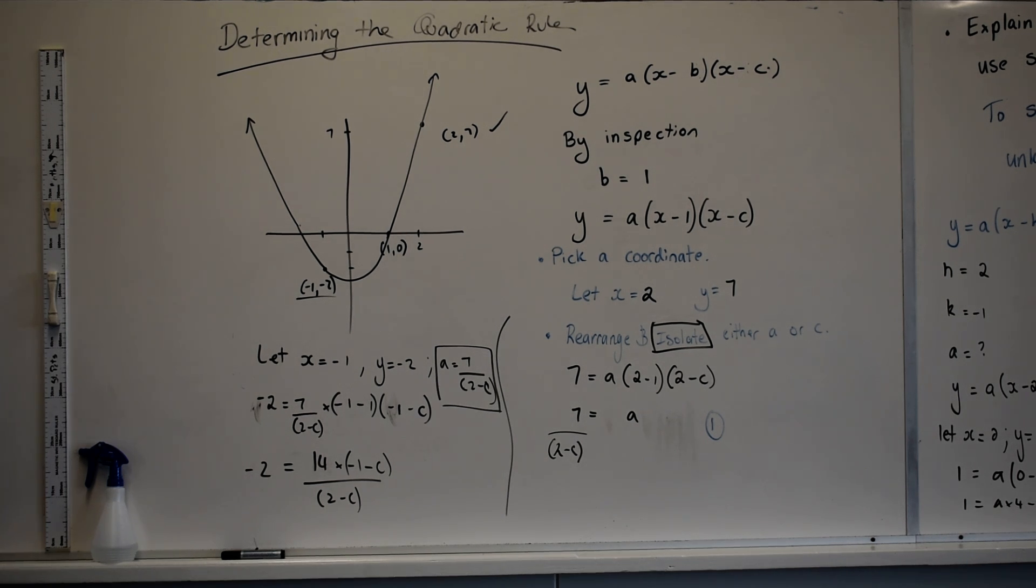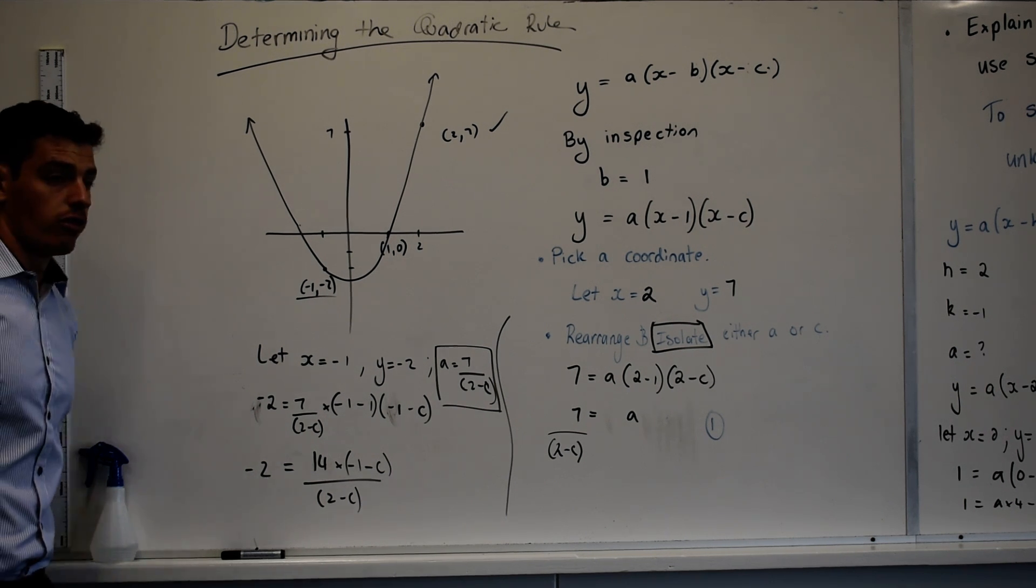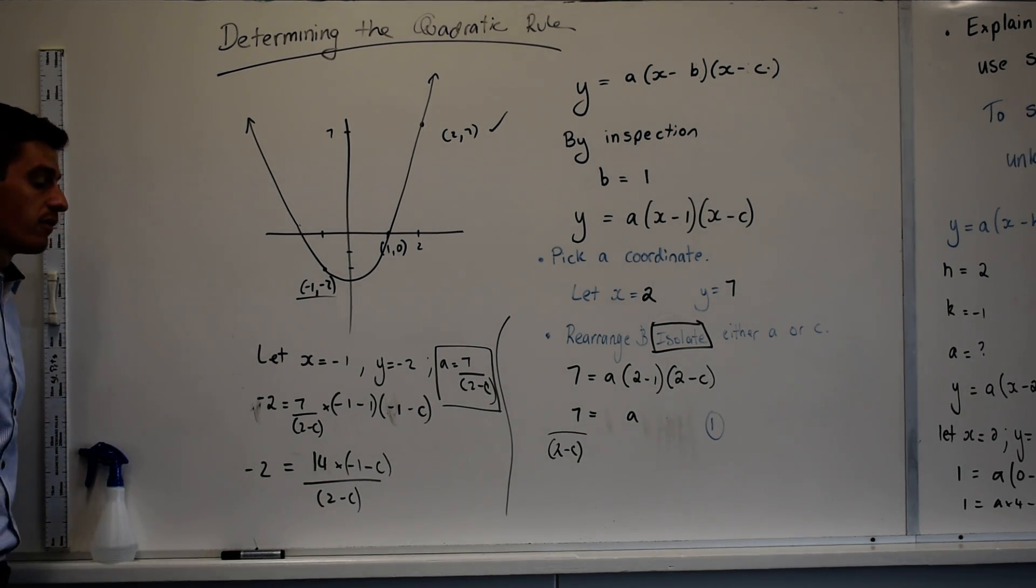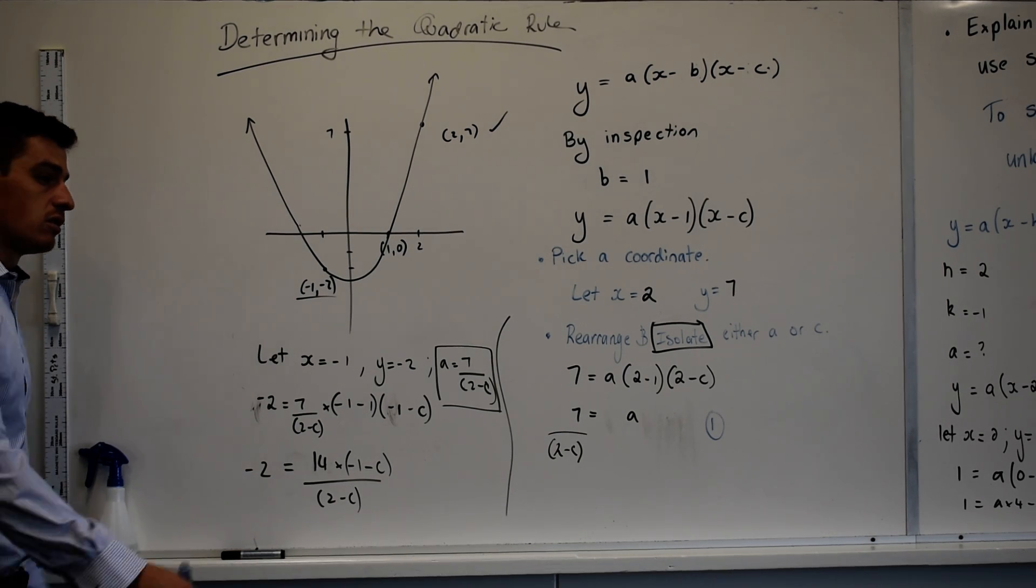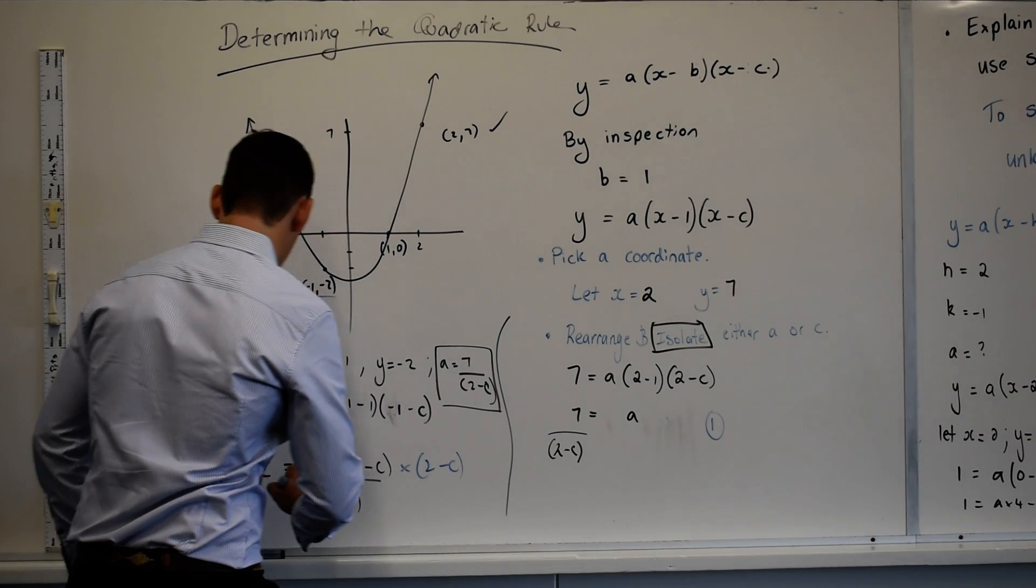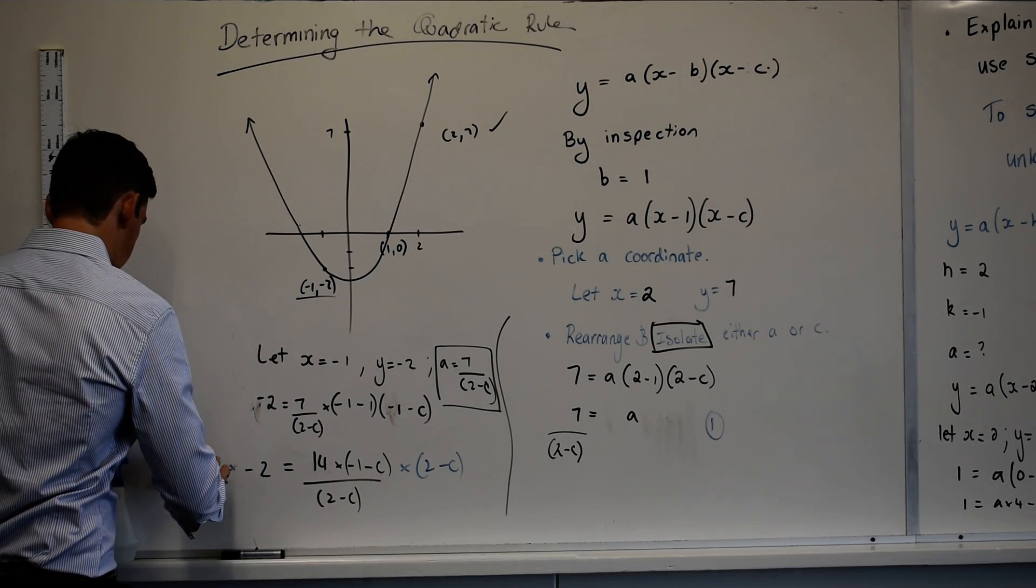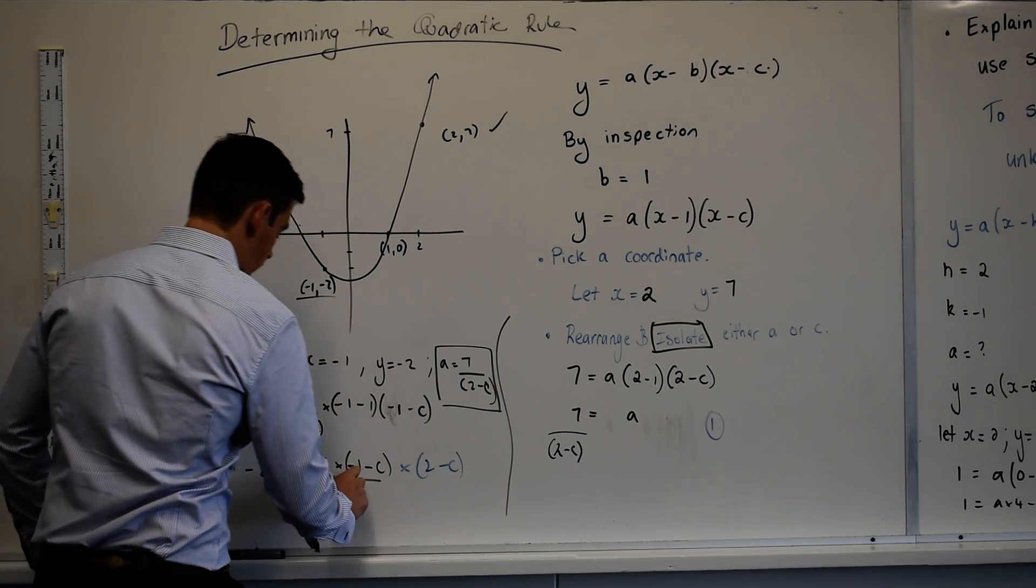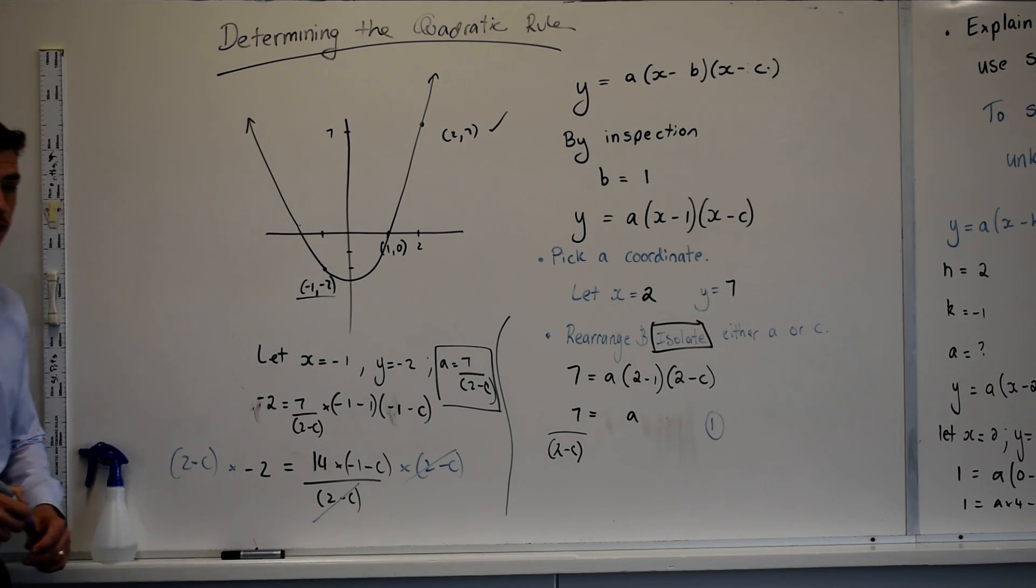What's the problem? We have a variable in the denominator we didn't get rid of, correct? How do we get rid of the variable in the denominator? Multiply both sides by 2 minus C, correct? Yeah. Am I good if I leave that there for you? Do you reckon you can solve that from there?